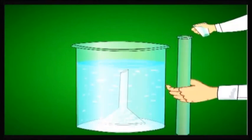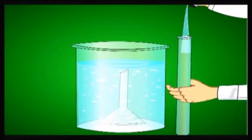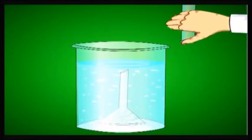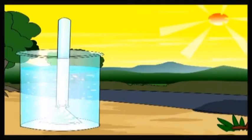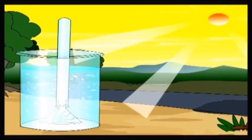Take a test tube filled with water and keep it inverted over the narrow end of the funnel. We have to keep the entire setup in sunlight for a few hours. After some time we observe that small bubbles of gas are coming out of the hydrilla twigs and are collected in the test tube by downward displacement of water.